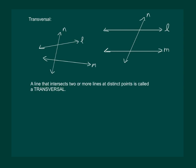Hence, we define that a line that intersects two or more lines at distinct points, means different points, is called a transversal. Here line N is a transversal to line L and M as it is intersecting each line on a distinct point.